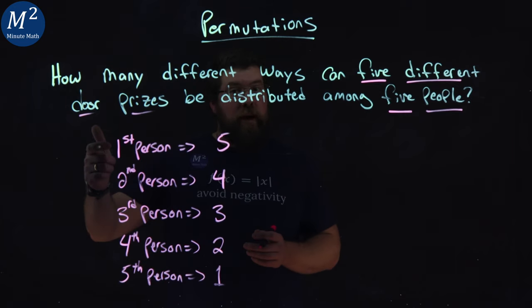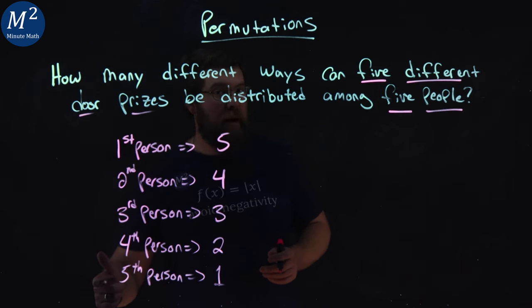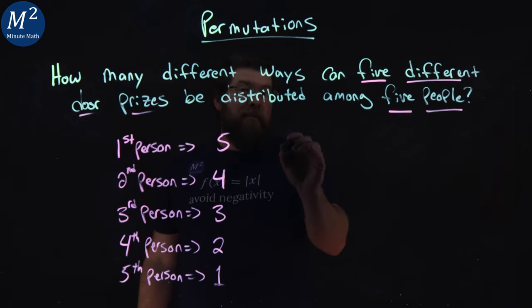And so, first person has five options. Second person, four options. Third person, three options. Fourth person, two options. Fifth person, one option. We end up multiplying this out.